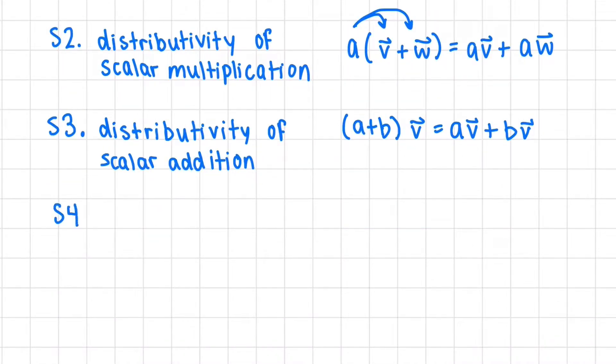Last two, we have the associativity. So this means if you do A times BV, this is the same as doing first A times B and then multiplying this product by our vector V.